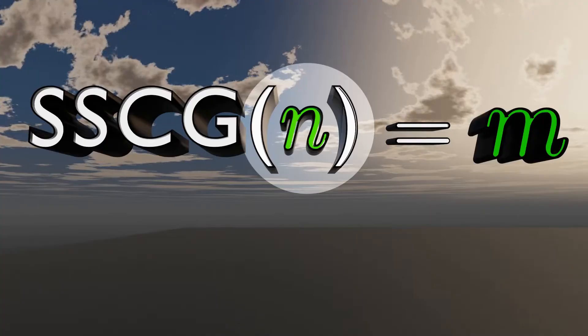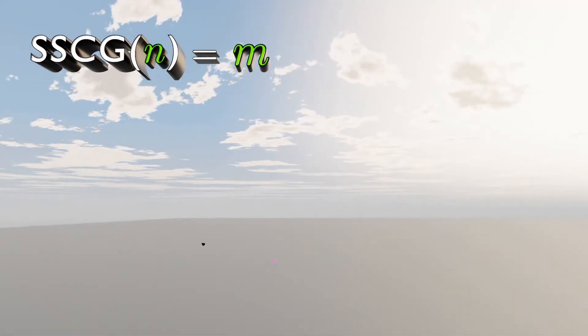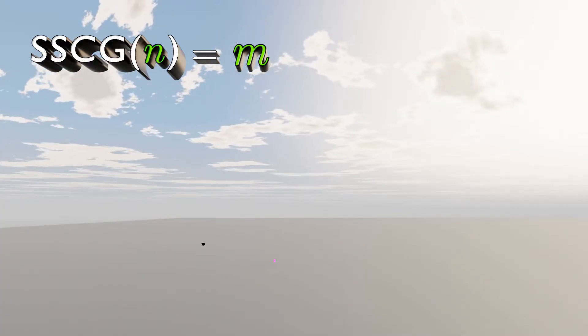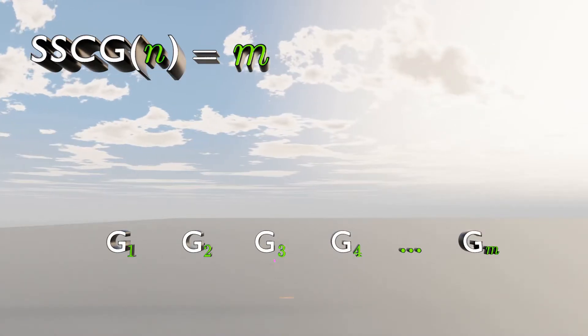But notice how we haven't talked about N yet. You will now see what the function of this variable is. Each one of these graphs can have a maximum number of vertices.